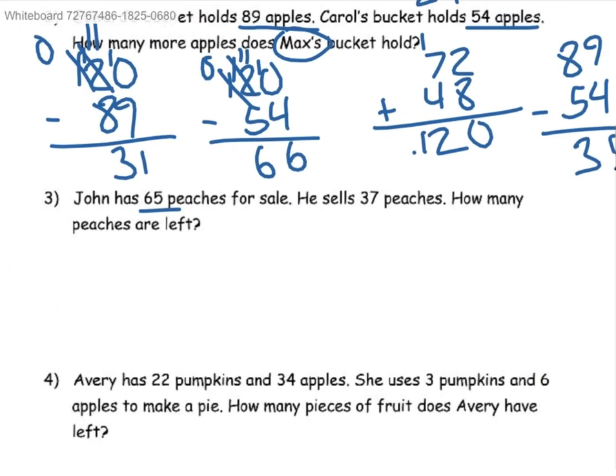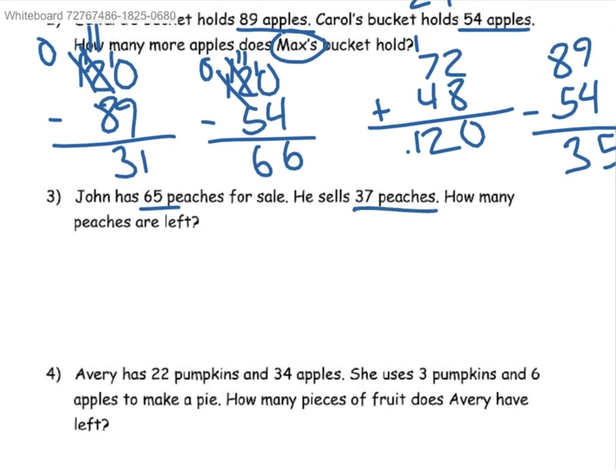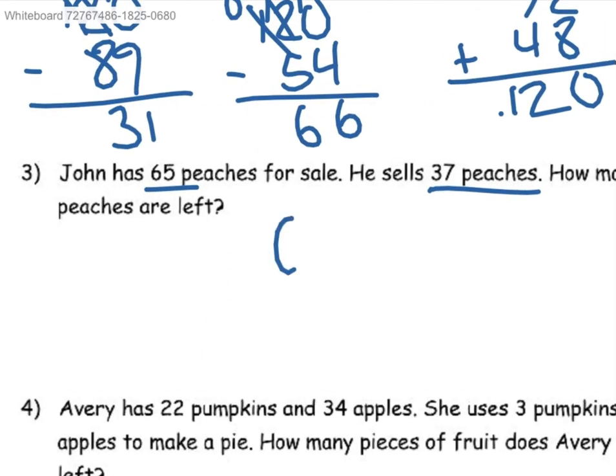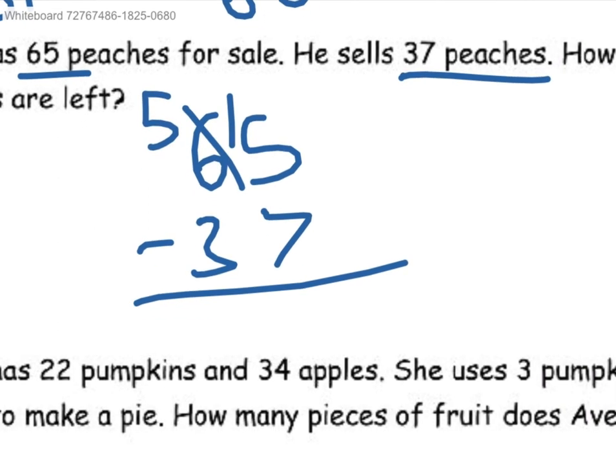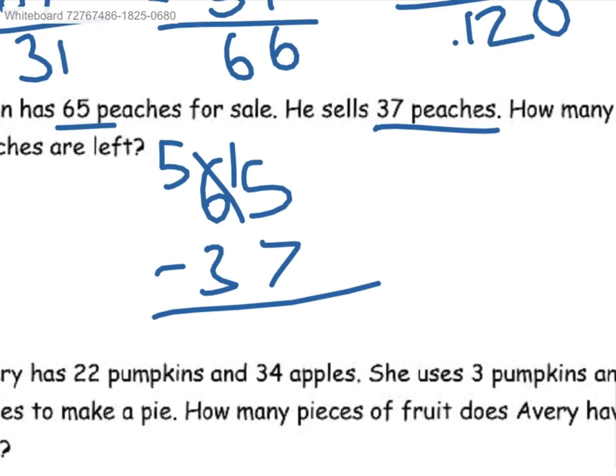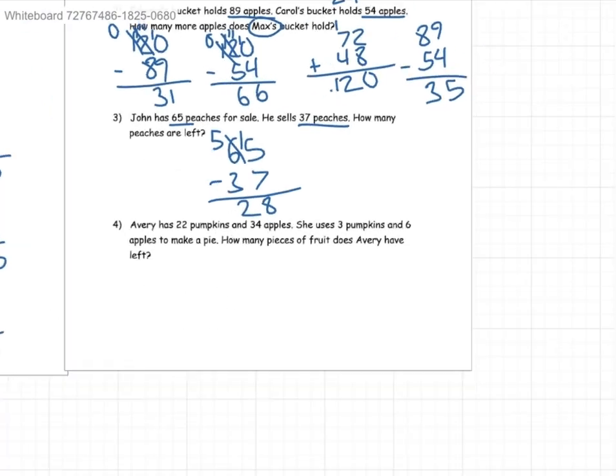John has 65 peaches for sale. He sells 37 peaches. How many peaches are left? So that would be 65 minus 37. 5 is less than 7, so I'll take this and turn it into a 5, I have the 10 here. So 15 minus 7, which is 8. And then 5 minus 3 is 2. So 28 are left.